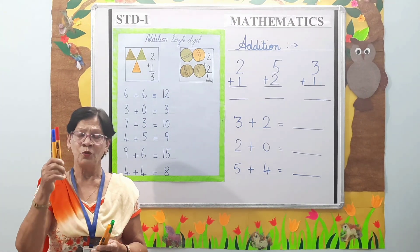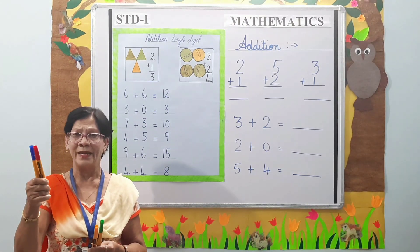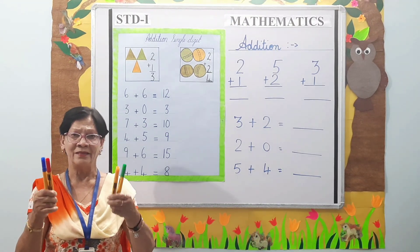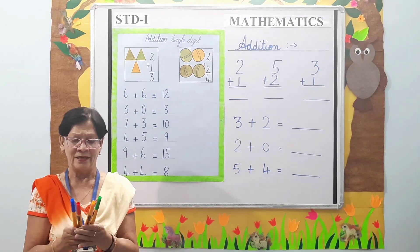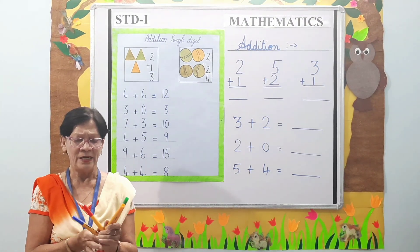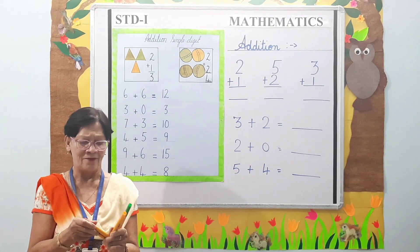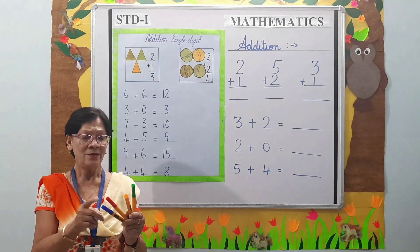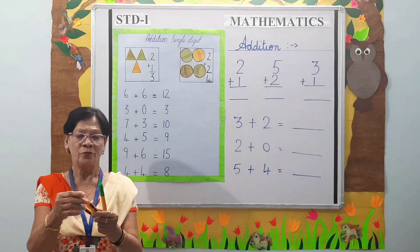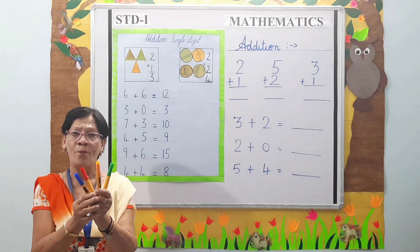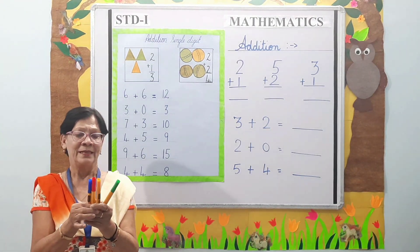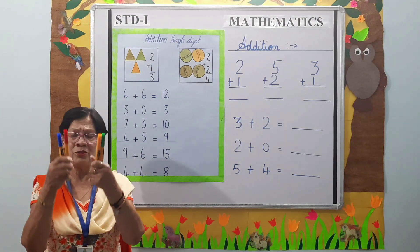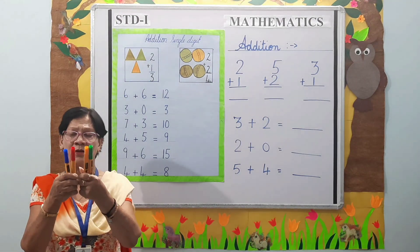Now look here students — I have two pens in one hand and two in the other. If I put them together, how many pens do I have? 1, 2, 3, 4 — 4 pens. That is 2 plus 2 is equal to 4.